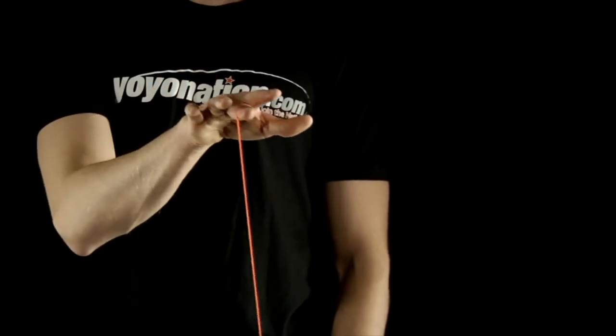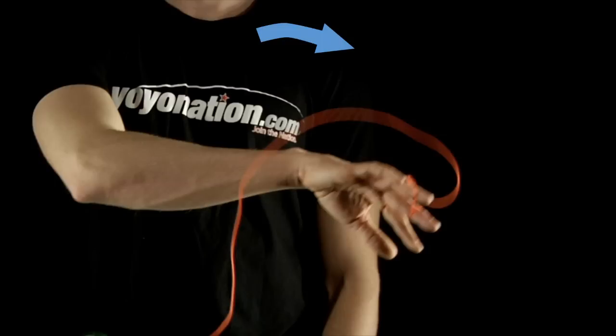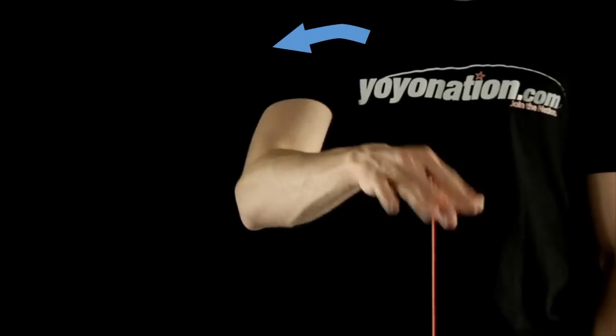After snapping your hand to pull the yoyo back up, move your hand up to one side and down again in an arc. The yoyo will go from a straight vertical return to a sideways motion.